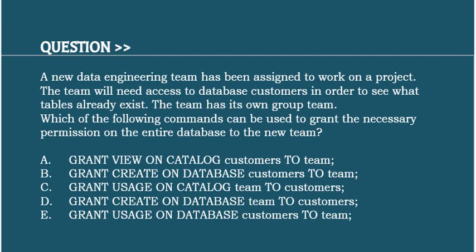Option A: GRANT VIEW ON CATALOG customers TO team. Option B: GRANT CREATE ON DATABASE customers TO team. Option C: GRANT USAGE ON CATALOG team TO customers. Option D: GRANT CREATE ON DATABASE team TO customers. Option E: GRANT USAGE ON DATABASE customers TO team.